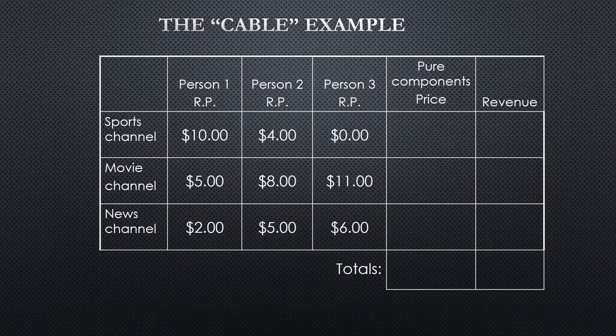In this particular case, for person one, their reservation price — the value they see in the sports channel — is $10. In other words, they're willing to pay $10 for the sports channel. Compared to the movie and news channel, they value sports more, but they are willing to pay $5 for movies and $2 for news.